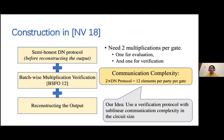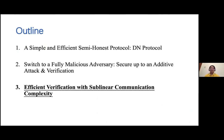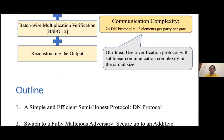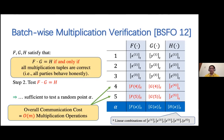To resolve this bottleneck, our idea is to use a verification protocol with sublinear communication complexity in the circuit size. Once we have such a verification protocol, we only need one multiplication operation per gate, since we no longer need one multiplication per gate for the verification step. The batch needs to be all the multiplication tuples together, so M is just the size of the circuit—as long as M is greater than n, it is fine.